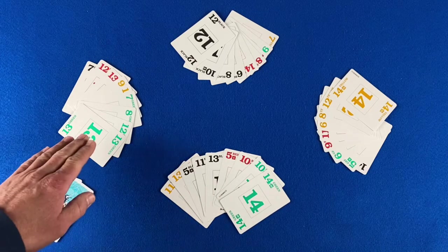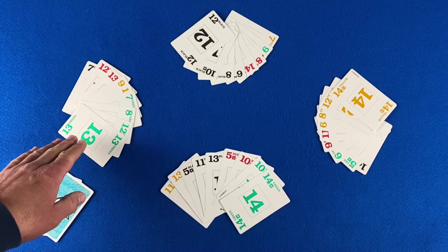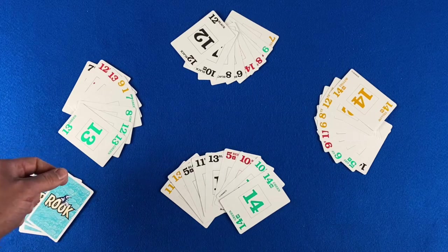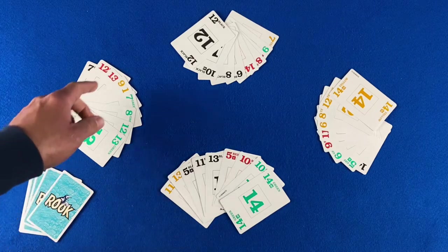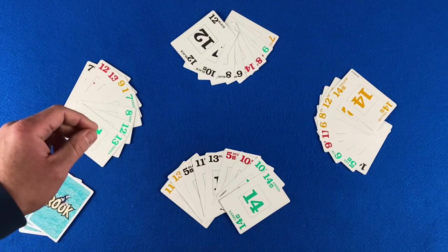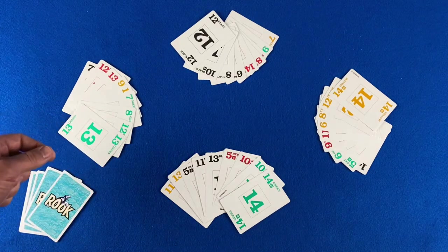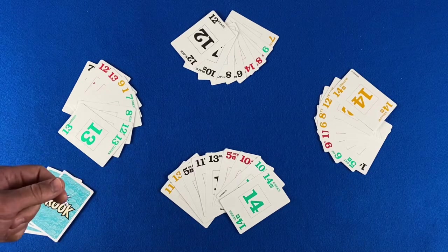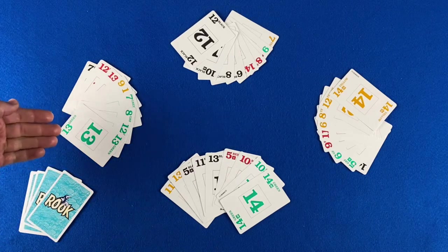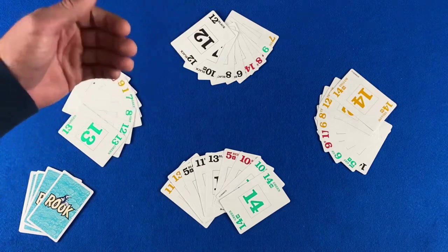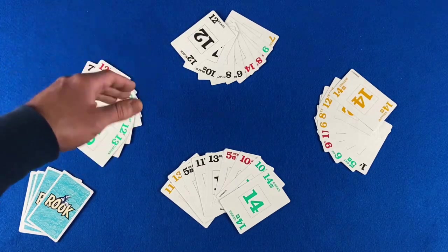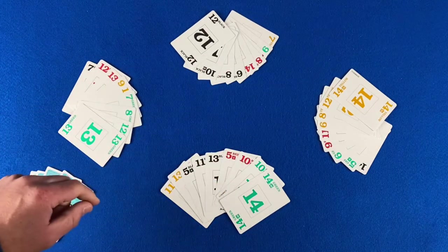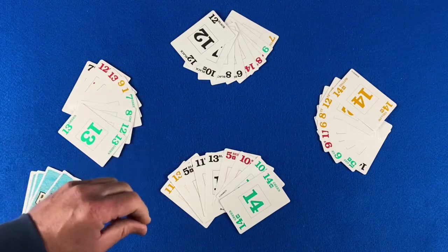The player to the left of the dealer gets to bid first. They may either bid a minimum of 70 or they can pass. Bidding continues around the table and each bid must increase by at least 5 points, and the increase must be in 5 point increments. So if the beginning bid is 70, the next bid would need to be 75 or 80 or 90. The bids need to be divisible by 5. Bidding continues around the table until all but one player has passed.